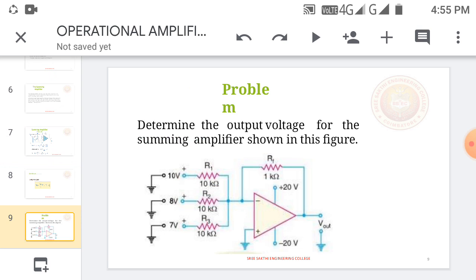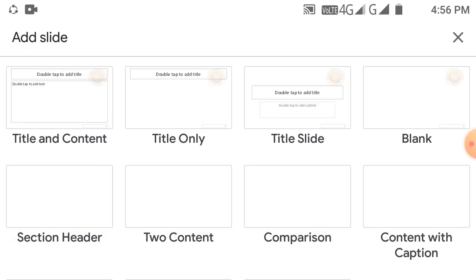This can be demonstrated with a problem: determine the output voltage for the summing amplifier shown in the figure. The resistance values R1, R2, R3 are given, and the feedback resistor RF is given. We know the formula for an inverting amplifier: minus RF by R1 times Vin. With that, we can calculate for V1, V2, V3, and finally, we can calculate the output voltage Vout.